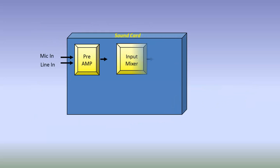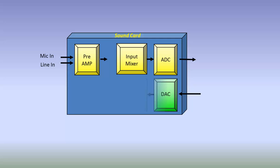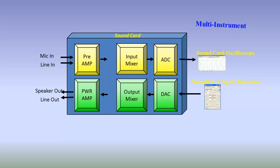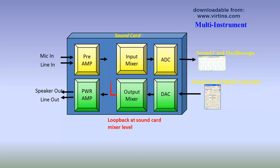Here we present the simplest way to demonstrate different Lissajous patterns. We use the sound card oscilloscope and signal generator provided by Multi-Instrument, which can be downloaded from www.virtins.com. To display the Lissajous patterns, we need to feed the signal generator output to the oscilloscope input. The simplest way is to establish a loopback at the sound card's mixer level by software configuration without any external cable.